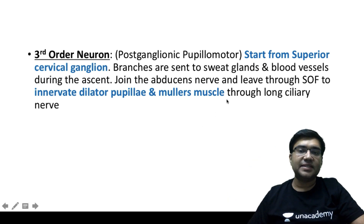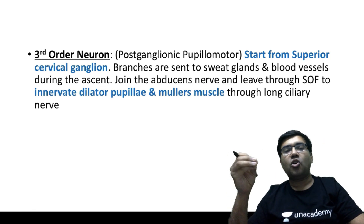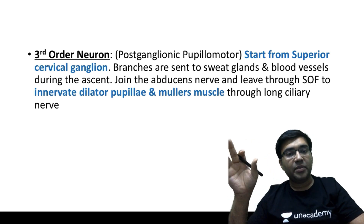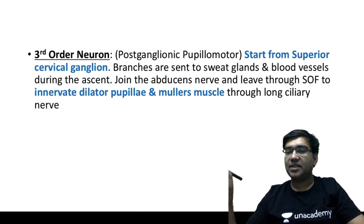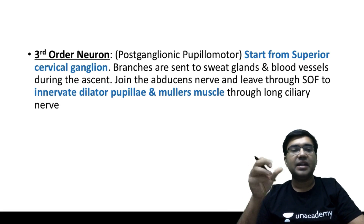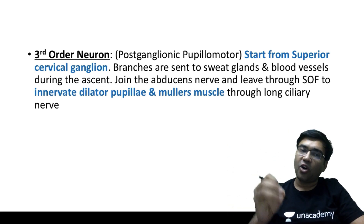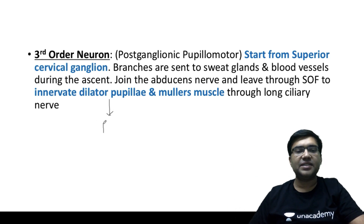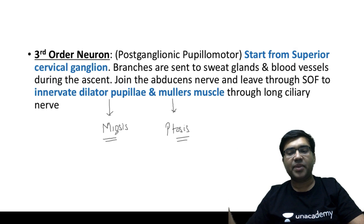The third order neurons innervate the sweat glands, the dilator pupillae, and Müller's muscle through the long ciliary nerves, joining the abducens nerve and leaving through the superior orbital fissure. The action of Müller's muscle, like the levator palpebrae superioris, is to elevate the eyelid. The action of the dilator pupillae is to dilate the pupil. So when these are affected, the patient has miosis and mild ptosis. It is not severe ptosis because the levator palpebrae superioris is still working fine.